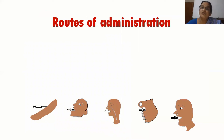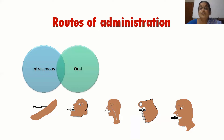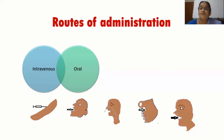Now, what are the different routes of administration? The mostly used route is intravenous for diagnostic radiopharmaceuticals — technetium-99m, the workhorse, is mostly intravenously administered. The oral route is used for iodine-131 for therapeutic high-dose or low-dose therapy, which can be in the form of a capsule or liquid.